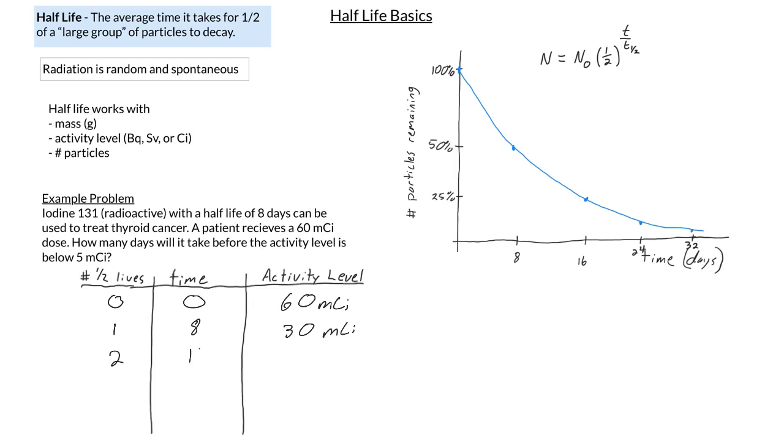And then I'm going to continue this pattern. Two half-lives, that is 16 days. And so in the half-lives column, you're going to simply count up one, two, three, four. In the time column, you're going to count up by the number of half-lives. And then in your activity level, or mass, or whatever it is, you're just going to keep cutting things in half. So this will be 15 millicurie after three half-lives.